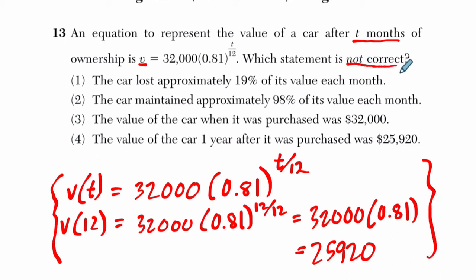We want to find a statement that's not correct. Choice one, the car lost approximately 19% of its value each month. But it's not each month, is it? It's each year. If it said each year, this would be correct, but it's not, so that's the answer. The only way I recognize that is because I looked at what happens after a year. It does lose 19%, but it takes a year to do that.